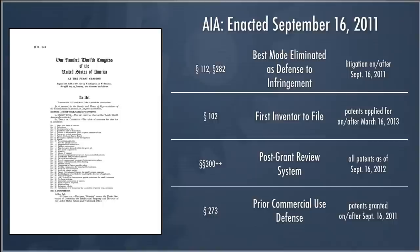The important pieces we'll focus on in this course are as follows. Sections 112 and 282 eliminate the best mode requirement as a defense to infringement — it doesn't eliminate best mode entirely, but removes it as a defense. Section 102 is altered significantly — probably where the most significant changes are — changing the U.S. system primarily to a first inventor to file system rather than a first inventor system. That applies to all patents applied on or after March 16, 2013.